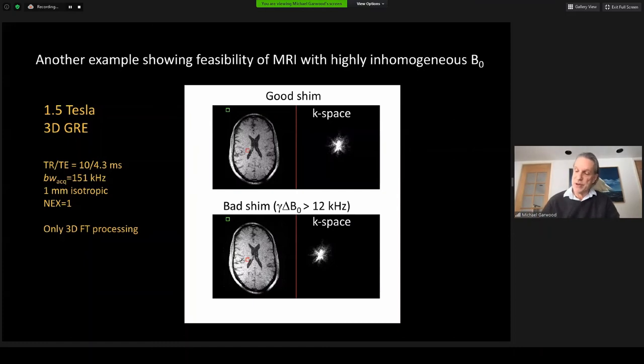As another example, here I show a single slice from a T1-weighted 3D gradient recalled echo acquisition with the 1.5T whole body magnet, having a good shim on the top and a bad shim, giving 12 kilohertz frequency variation over the brain at the bottom. These are the raw images. No post-processing distortion correction has been performed. As you can see, except for a modest degree of distortion due to the inhomogeneity's effect on the frequency encoding, the images are very similar in quality and signal-to-noise ratio using a relatively high acquisition bandwidth and a short echo time, in this case 4.3 milliseconds, made this imaging possible despite extreme field inhomogeneity.